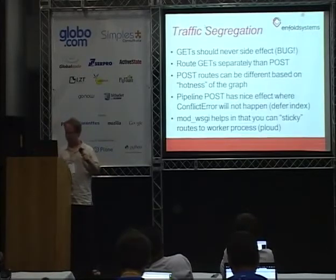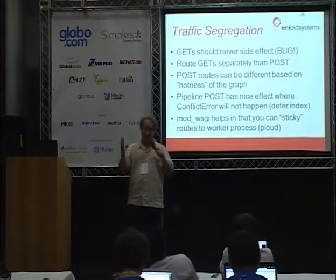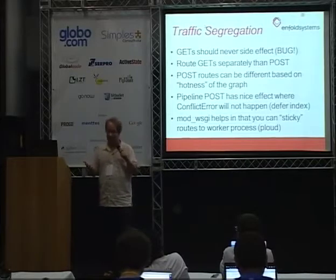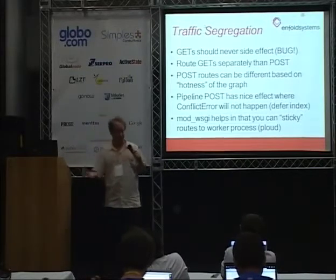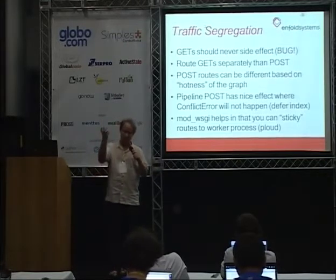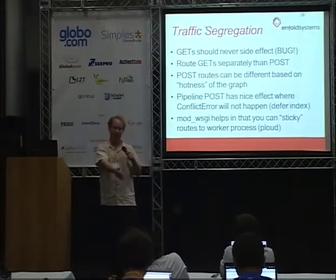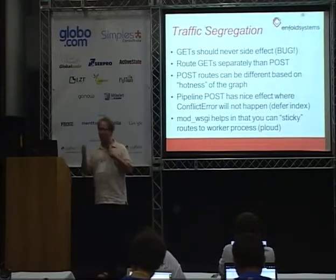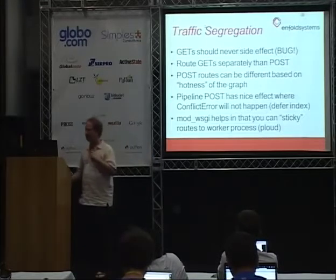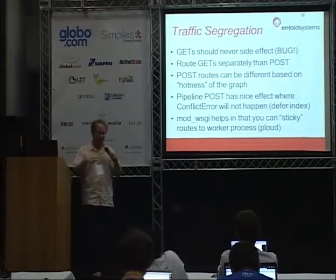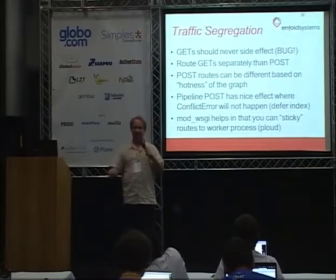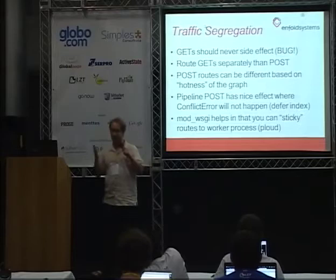Another optimization is to just separate your traffic. GETs inside Plone should never have side effects — there is one GET I know of that causes a side effect and we're trying to fix that. You can route and segregate traffic so all GETs go to a simple pool and POSTs go to something fairly smart. If you route POSTs in some way, you can get conflict errors depending on where you're doing writes. ModWhiskey helps with this segregation because inside the Whiskey pipeline you can say, this person I'm going to send to this process based on this verb — it's very simple Whiskey stuff and exactly what you want to do.